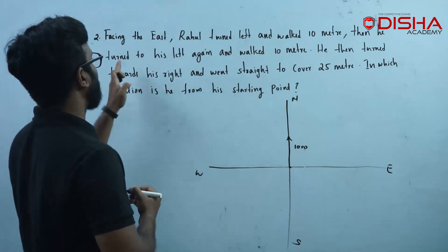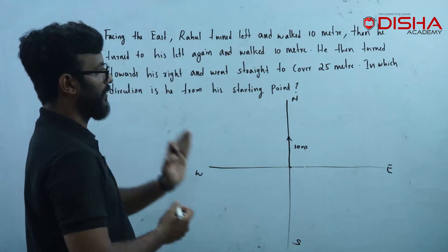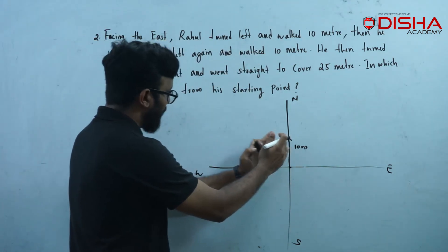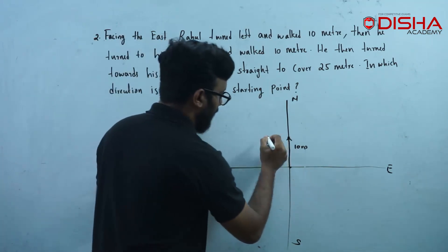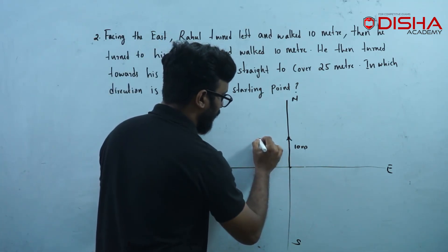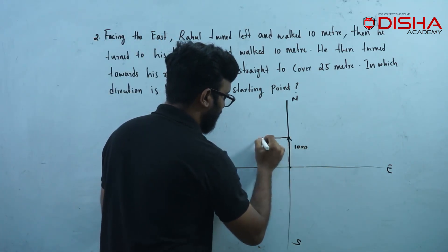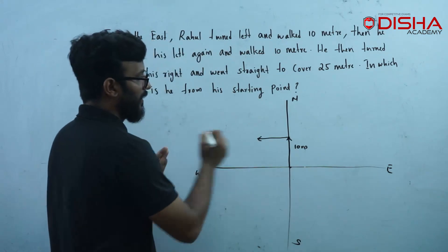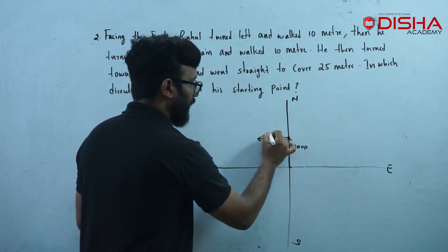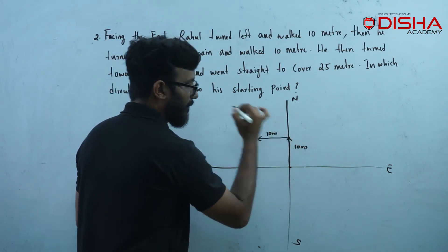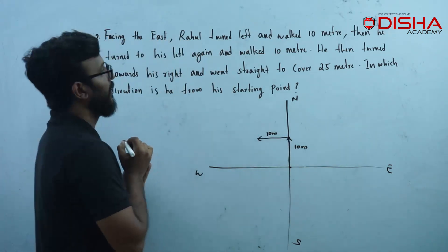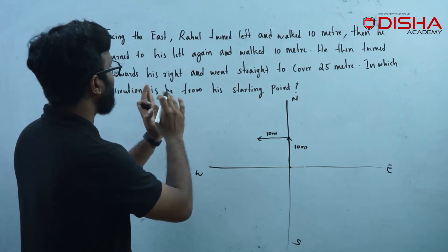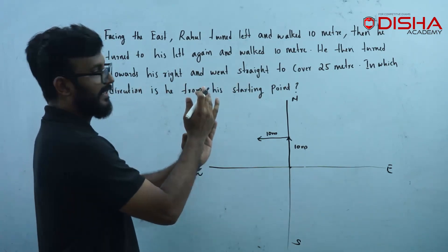So to the east, if we have left, that is about 10 meters north. Then he turned to his left again. He moved forward. He then turned towards his right.